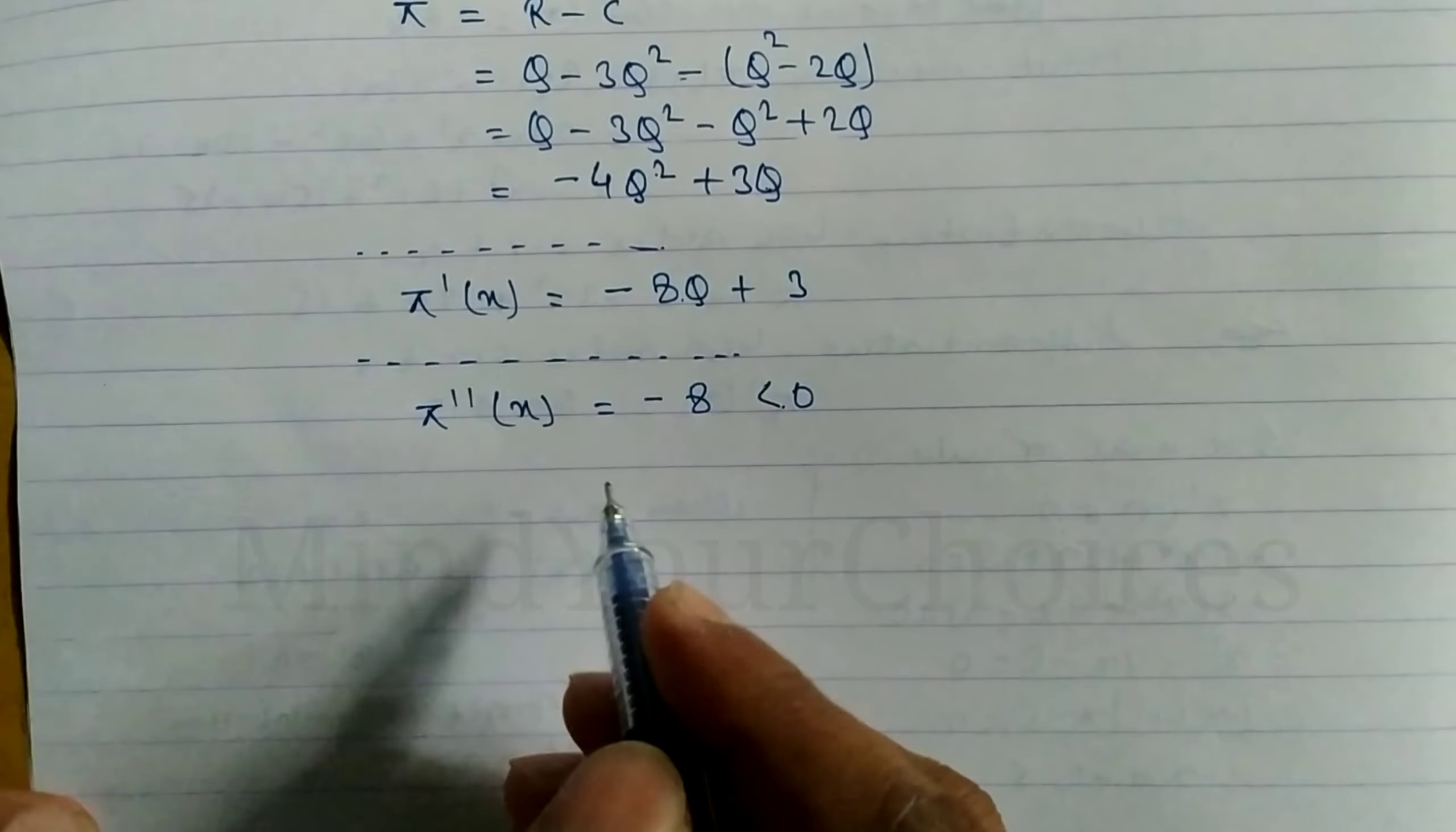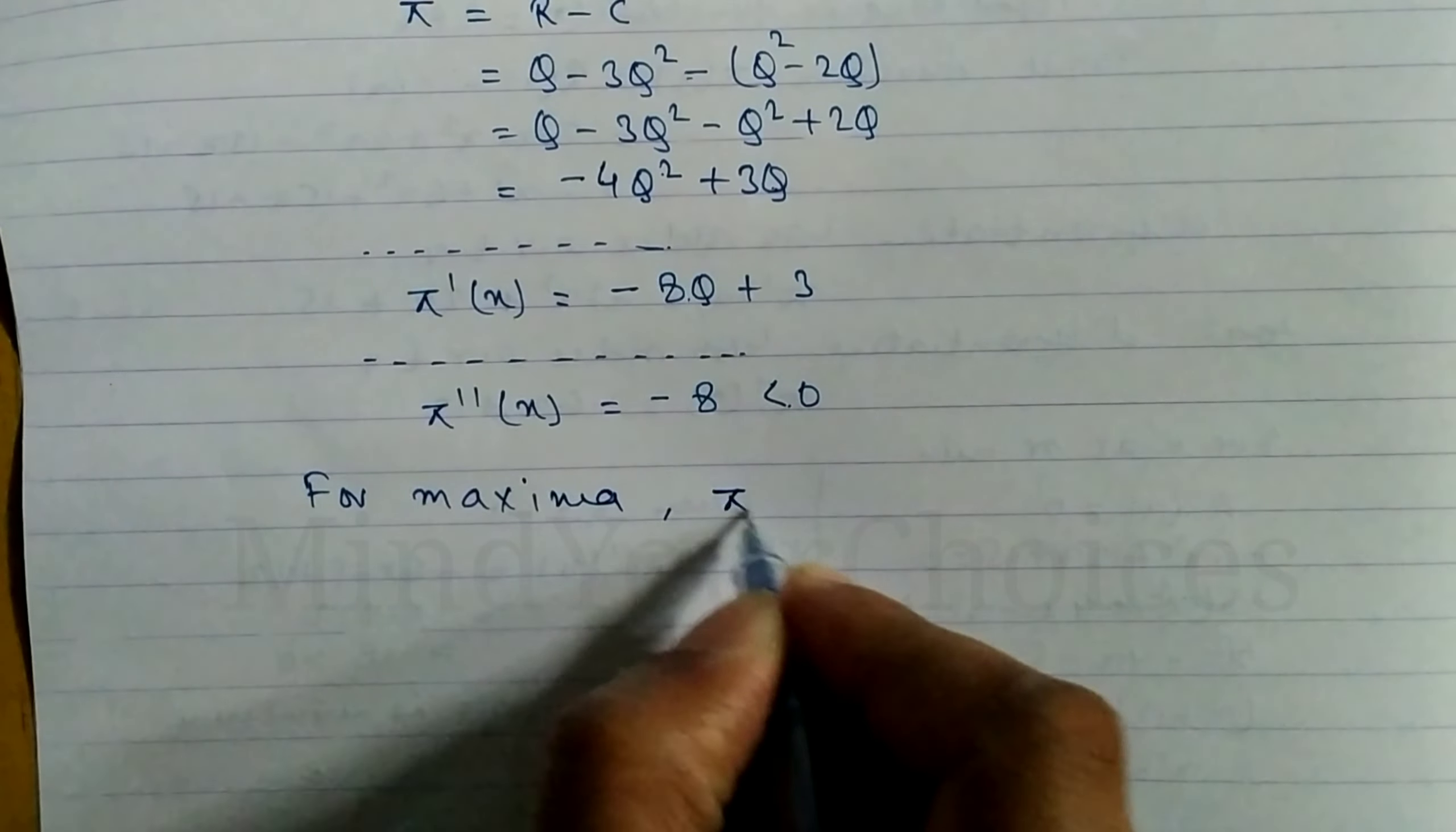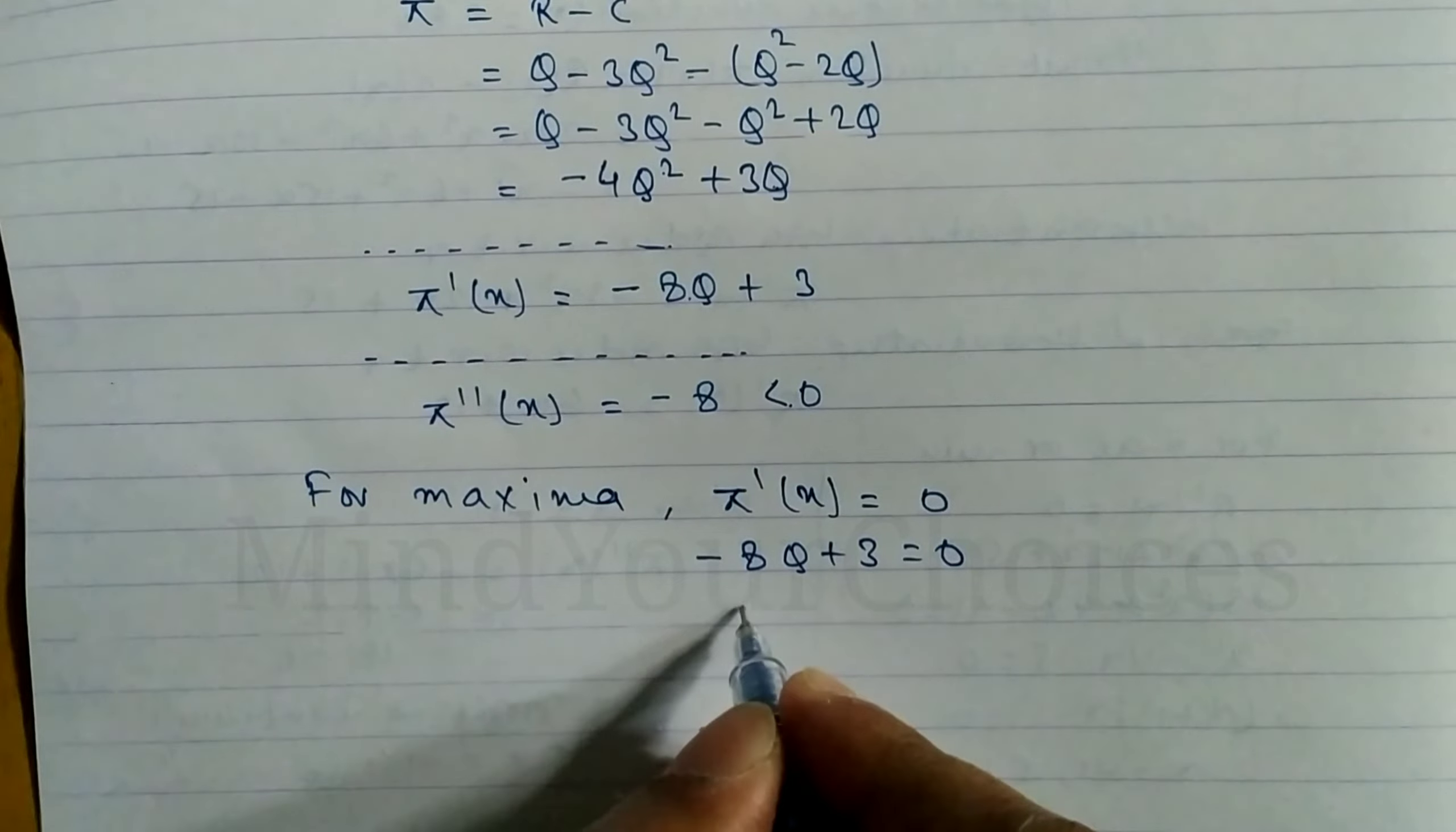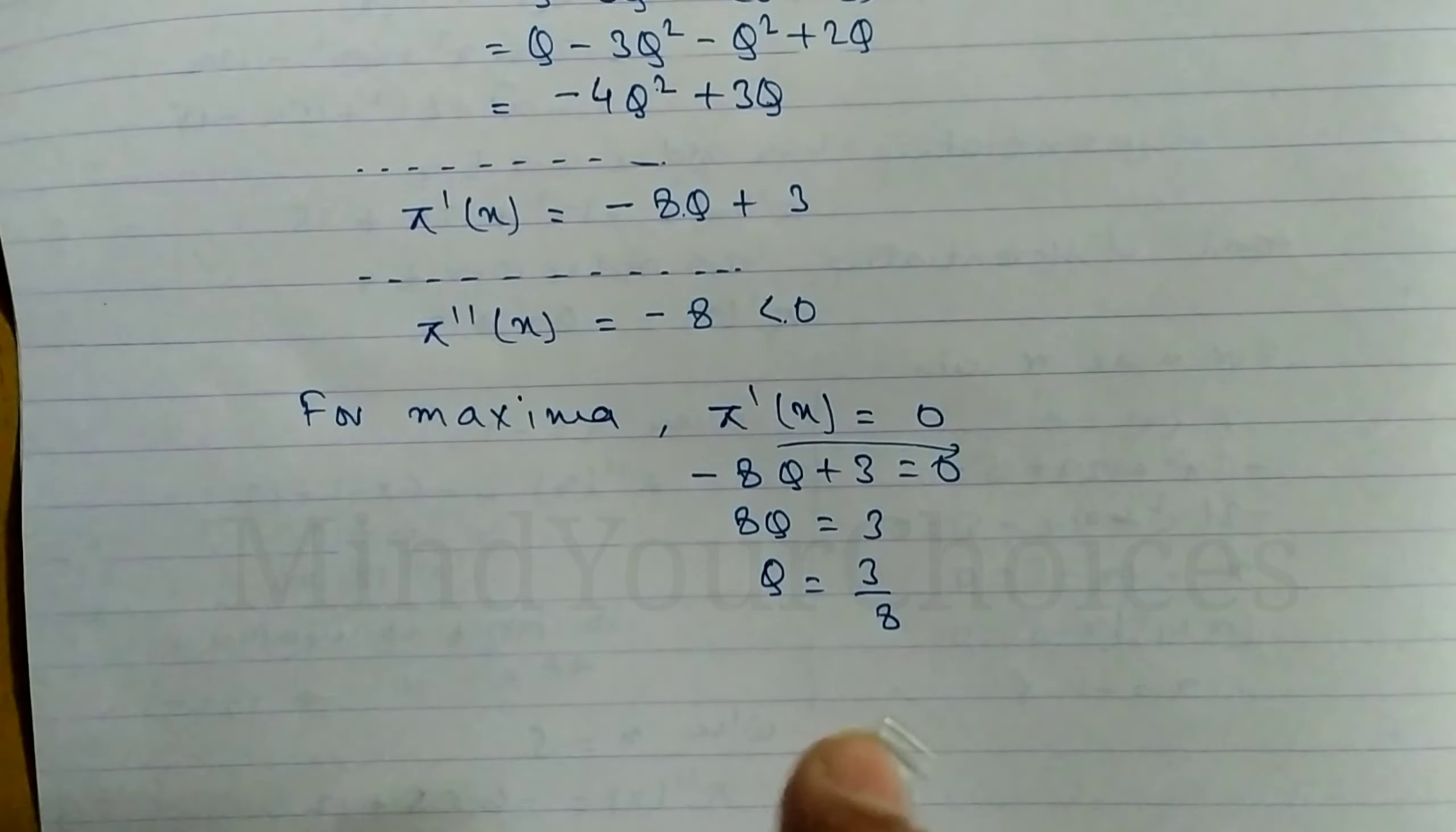So for maximum profit, first derivative equals 0. First derivative minus 8Q plus 3 equals 0, so 8Q equals 3, therefore Q equals 3 by 8. This is the Q value.